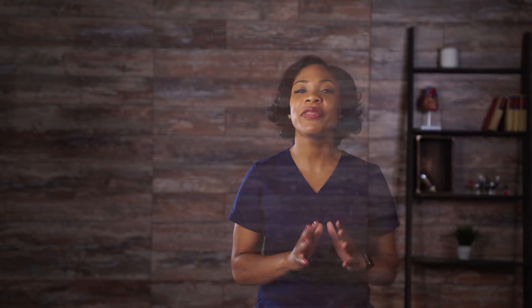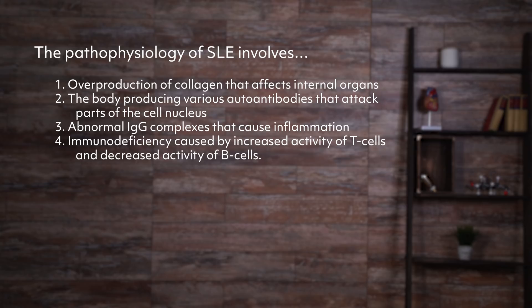And lastly, the pathophysiology of SLE involves: number one, overproduction of collagen that affects internal organs; number two, the body producing various autoantibodies that attack parts of the cell nucleus; number three, abnormal IgG complexes that cause inflammation; or number four, immunodeficiency caused by increased activity of T cells and decreased activity of B cells. If you chose number two, you're correct. In SLE, the body produces many autoantibodies that are directed against parts of the cell nucleus, particularly DNA. Antigen-antibody complexes form and enter the bloodstream, getting deposited in blood vessel walls, organs, and tissues, which causes inflammation.